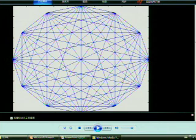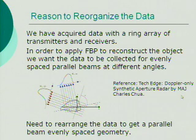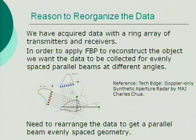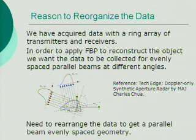But this is not what we want, so we need to do interpolation and manipulation. We acquired data with a ring array of transmitters and receivers, but in order to apply filtered back projection to reconstruct the object, we want the data to be collected for evenly spaced parallel beams at different angles. So we collect data for different parallel paths, then rotate to a different angle and collect again. We need to rearrange the data to get a parallel beam evenly spaced geometry.